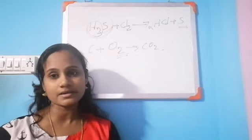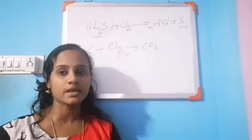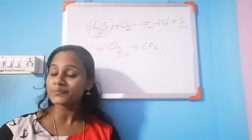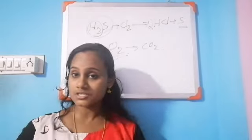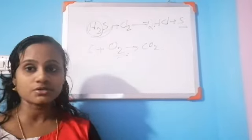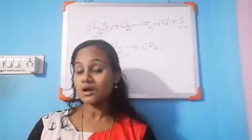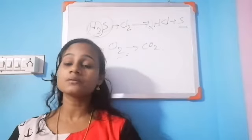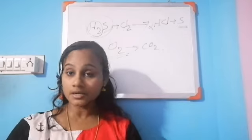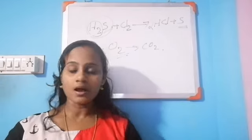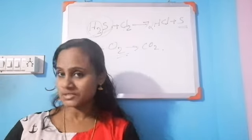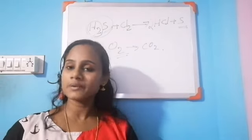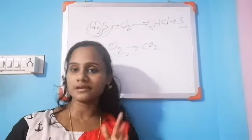Other examples of oxidizing agents include carbon dioxide and nitric acid. So, children, what is oxidation? Oxidation is an addition of oxygen or removal of hydrogen. What is an oxidizing agent? The substance that supplies oxygen or removes hydrogen is called an oxidizing agent. Examples of oxidizing agents are oxygen, chlorine, carbon dioxide, nitric acid, etc.